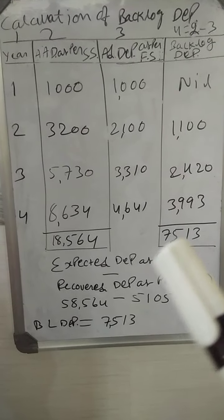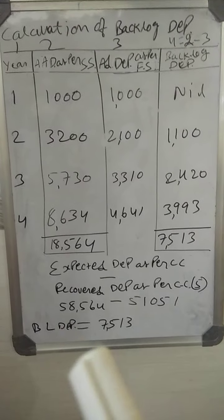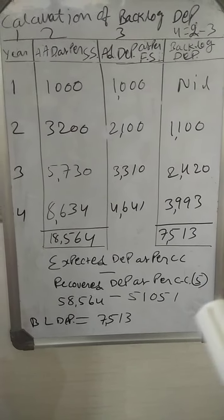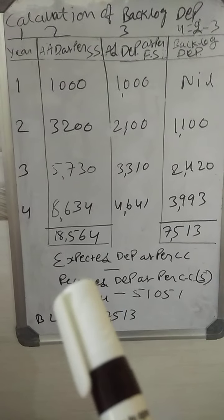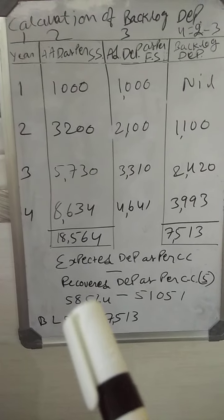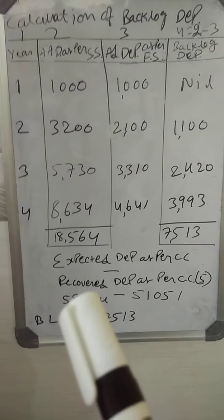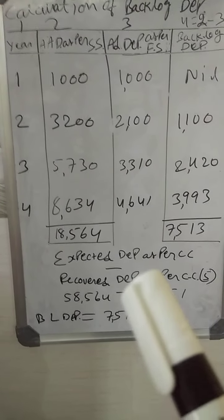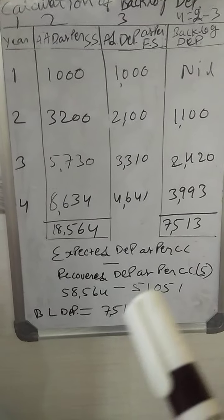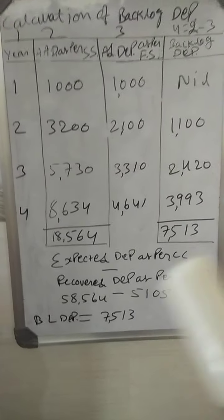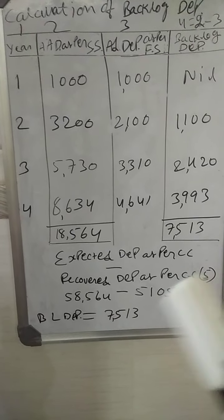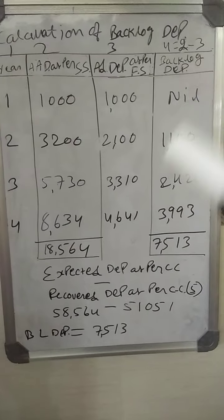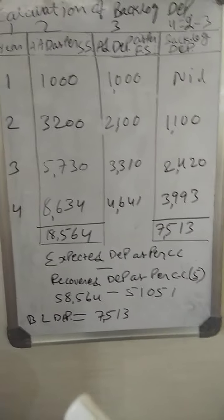The second column total represents the difference between expected depreciation as per current cost and recovered depreciation as per current cost. The machinery value is 58,564. Recovered depreciation as per current cost — the fifth column total — is 51,051. Therefore, the total backlog depreciation is 7,513. This completes the individual three-table calculation. Thank you.